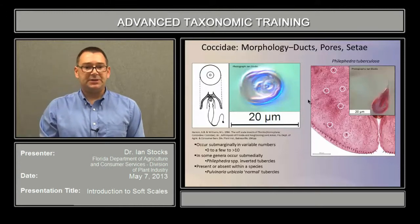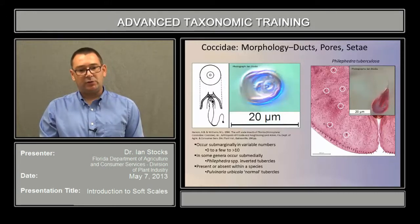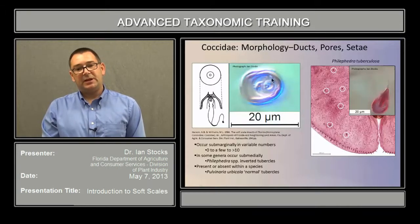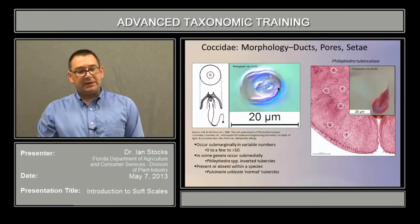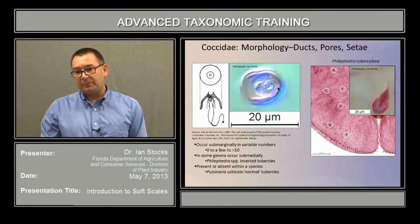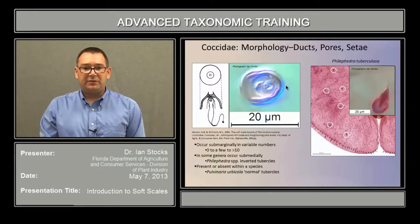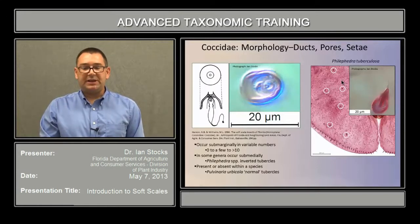Another major duct type is the dorsal tubercle. The standard dorsal tubercle is essentially a circular mound but has fairly complex internal micromorphology. These occur sub-marginally in variable numbers, from zero or just a few to more than ten, and they can be present or absent even within a single species — for instance, it's typical for Pulvinaria herbicola to have tubercles, but not uncommon for there to be none. A very special type of duct tubercle occurs in the genus Philephedra, known as the inverted tubercle, which has an even more complex morphology and whose distribution can go into the sub-margin and even the medial areas of the body.